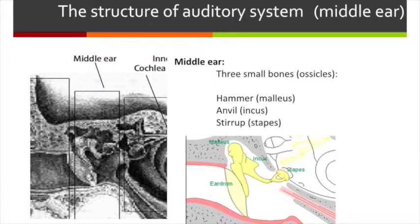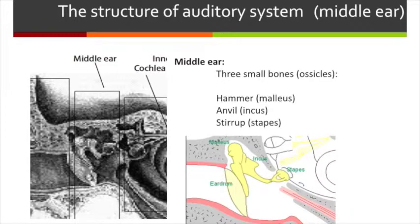As seen in the diagram, the middle ear is made of three small bones: the hammer, anvil, and stirrup. When the sound wave strikes the eardrum, it will generate vibration. The vibration will be transmitted into the inner ear by these three bones. As seen in the following video, these three bones work closely together to make this transmission smooth.